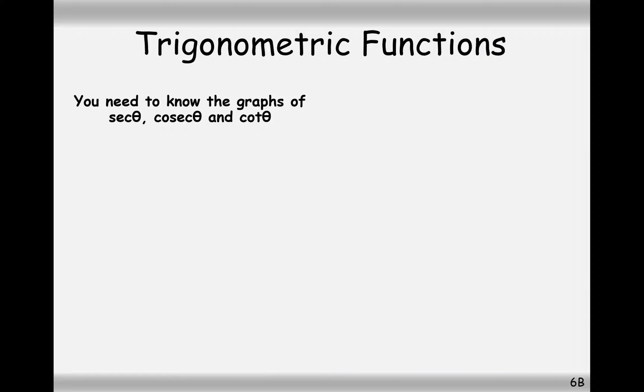So we can get the graphs of cosec, sec and cot from the original sine, cos and tan graph. Let me show you how we can do that. If you take the original sine graph here, we have starting off in the decimal values, it hits a peak of 1, goes back into the decimal values, goes into the negative decimal values, hits a minimum point of minus 1 and then heads back up into the decimal values.